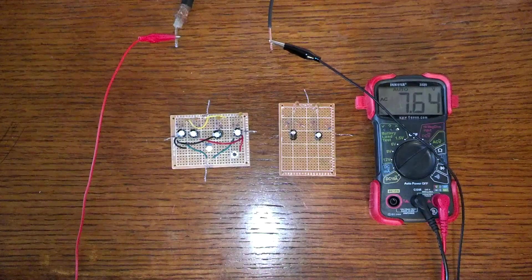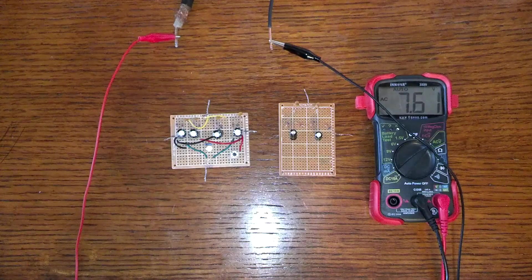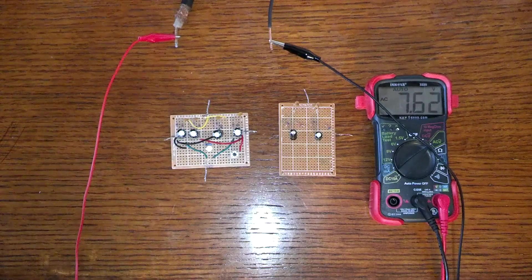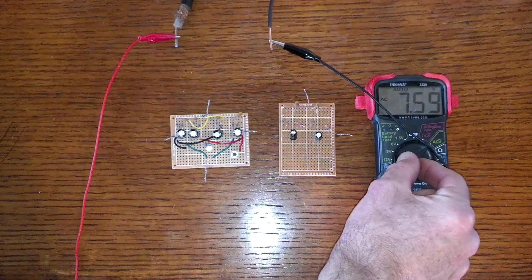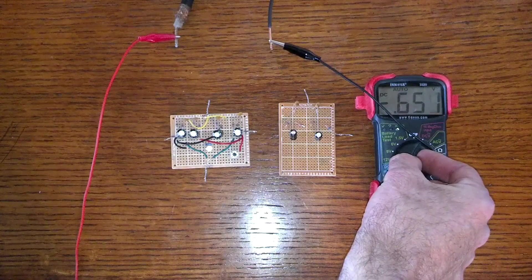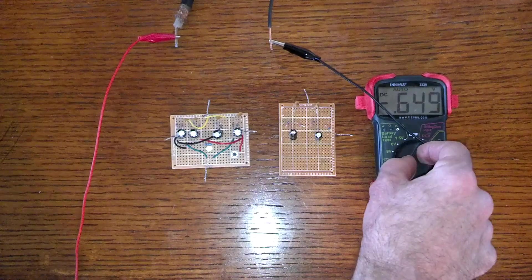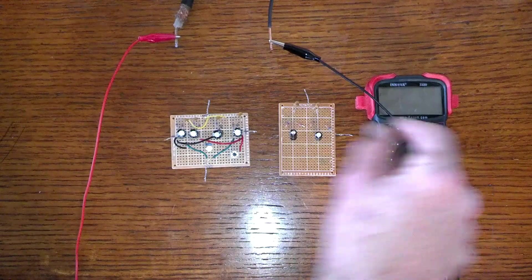There we go. So we're getting 7.62 volts alternating current right off the bat there. Just straight antenna and ground. Let's see what DC says. Negative .6. Alright. So. Turn that off.